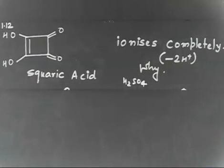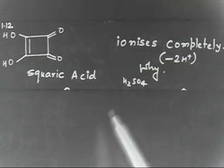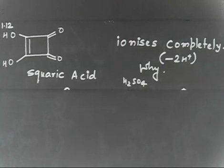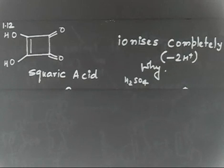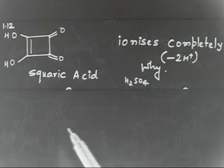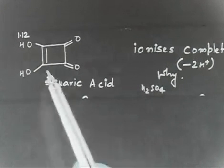This compound, squaric acid, is as strong as H2SO4 because H2SO4 can also lose 2H+, and this compound can also lose 2H+. Now, using resonance theory, you have to explain why squaric acid is so acidic. Use the resonance theory to explain why this is so acidic.